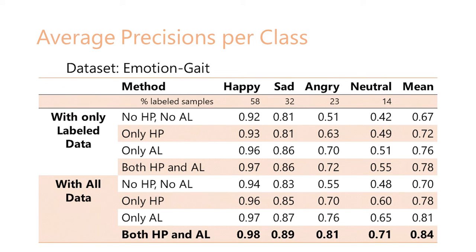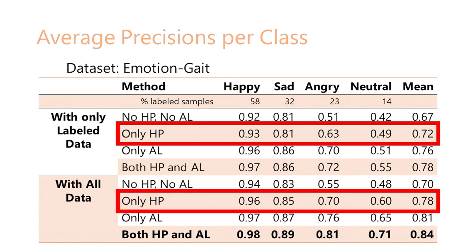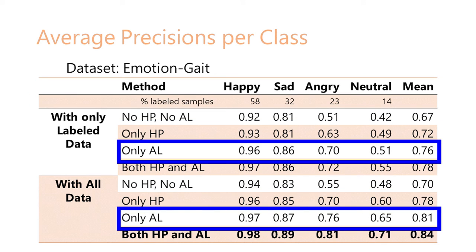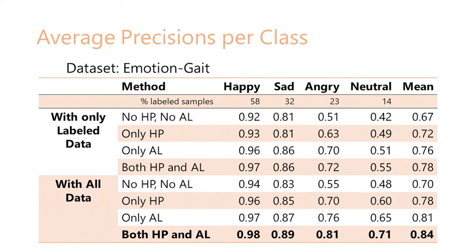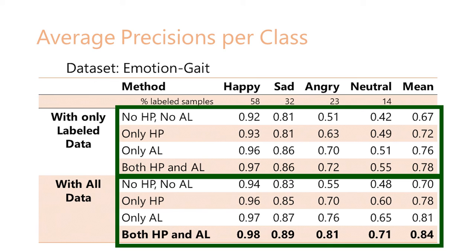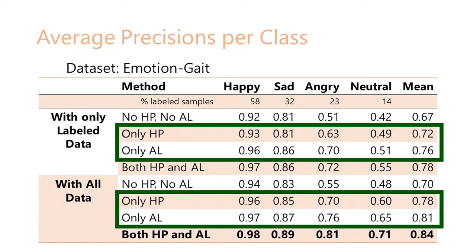We also perform ablation studies to show the benefit of our two contributed components: hierarchical attention pooling on the joints, denoted as HP, and using affective loss constraint on a subset of the latent embeddings learned by the encoder, denoted as AL. As we can observe, adding these components improves the average precision from a baseline version of our network without these components. In particular, we observe that adding only the AL provides more benefits than adding only the HP. This is reasonable since hierarchical pooling helps the network learn generic differences in the pose sequences of different data, while the affective loss constraint helps the network to distinguish between pose structures specific to different perceived emotions.